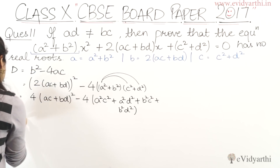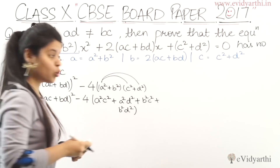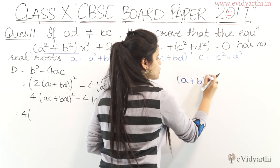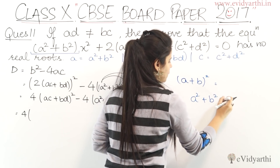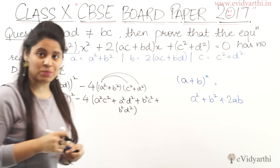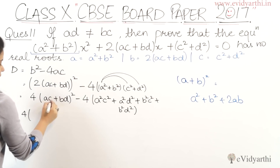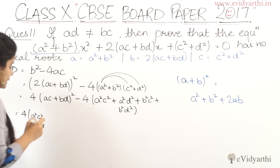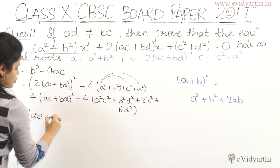We keep 4 inside and expand (ac + bd)² using the identity (a + b)² = a² + 2ab + b². So this gives ac² which is a²c², then b² which is b²d², and then plus 2ab where a is ac and b is bd.